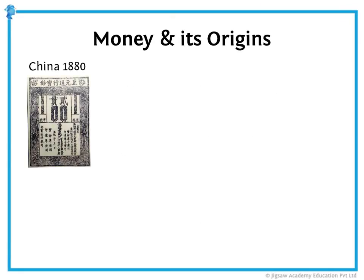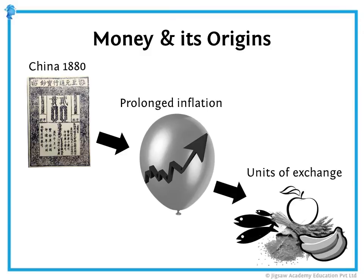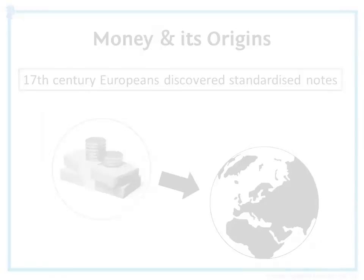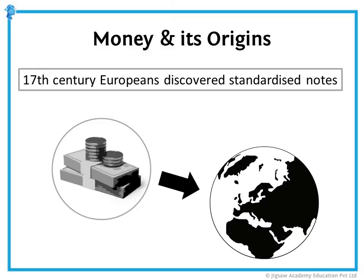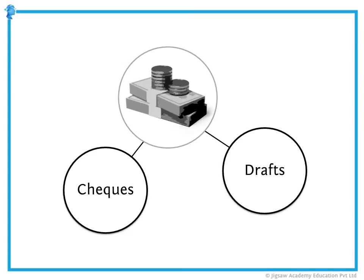Printed notes were first seen in China in 1880, but due to prolonged inflation, they slowly lost their value and people went back to using commodities as units of exchange. In the 17th century, Europeans discovered how to use standardized notes, and this is how notes and coins came to the rest of the world. In our modern economies, we've gone beyond this — we've moved on to checks and drafts, which can be used in lieu of coins and notes.